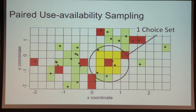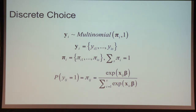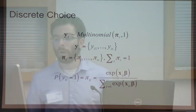Now that's the broad overview of the context we're working in with use and availability models. I'll go through some of the models I've pulled together, and on the screen we'll pull up these models and fit some of them in R. The first one we'll consider is a discrete choice model, where we have a used sample unit paired with one or more available sample units.